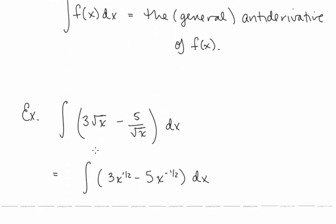So for example, the integral of 3 radical x minus 5 over radical x dx is equal to the integral of 3x to the 1 half minus 5x to the negative 1 half. Remember that we first want to write these in the notation that we need for our antiderivative rules.